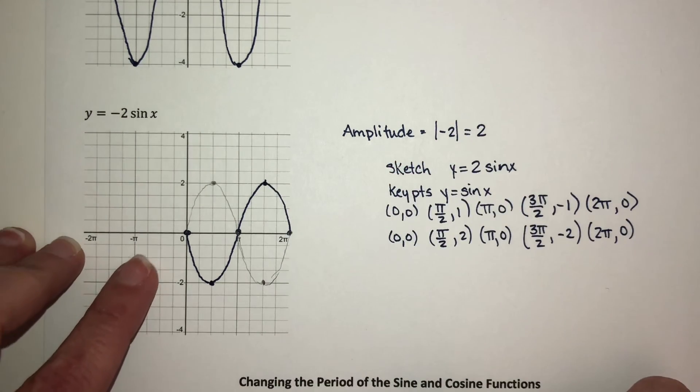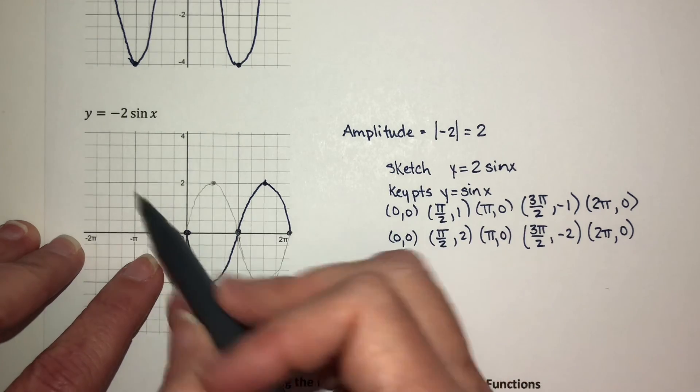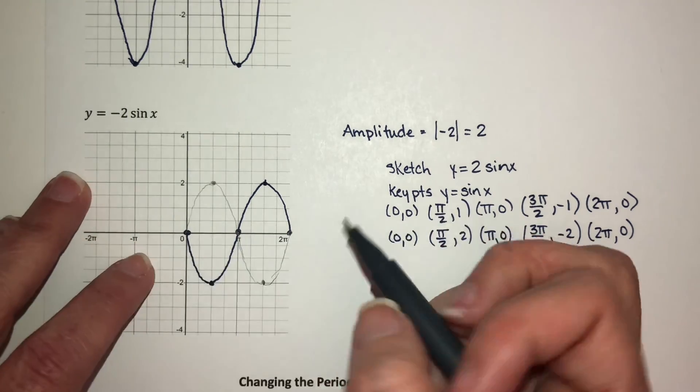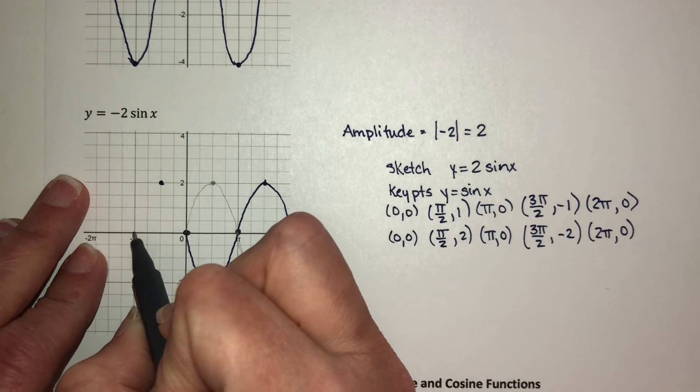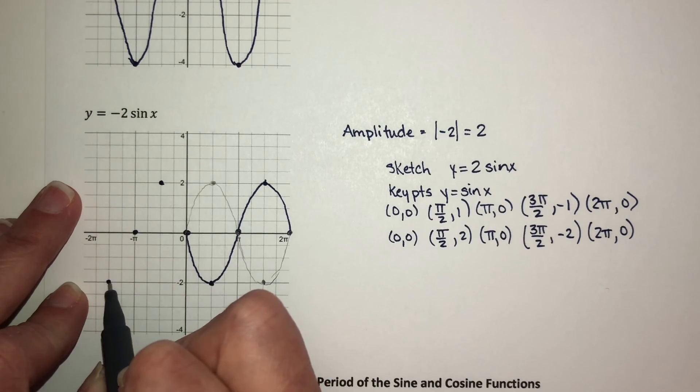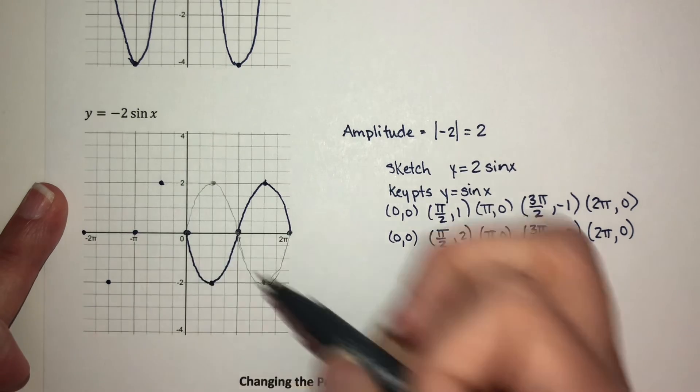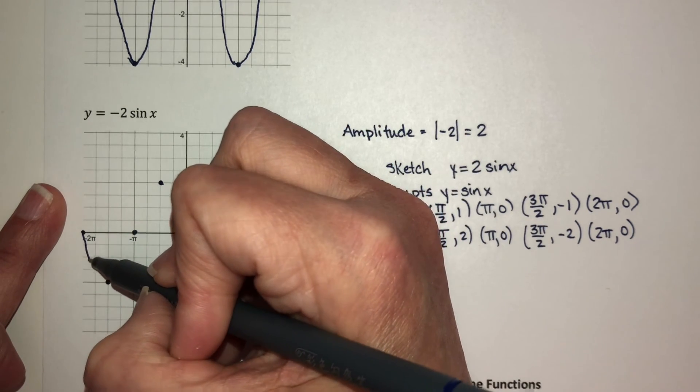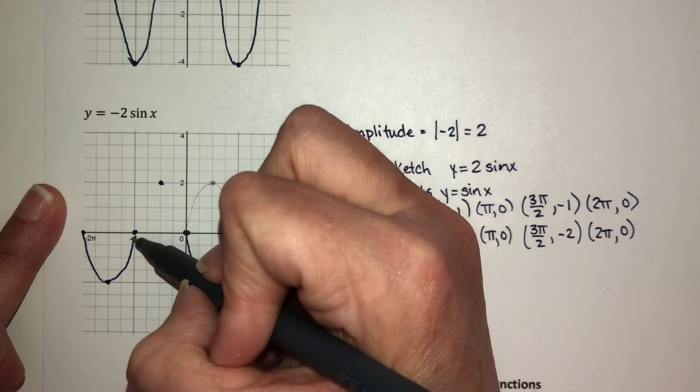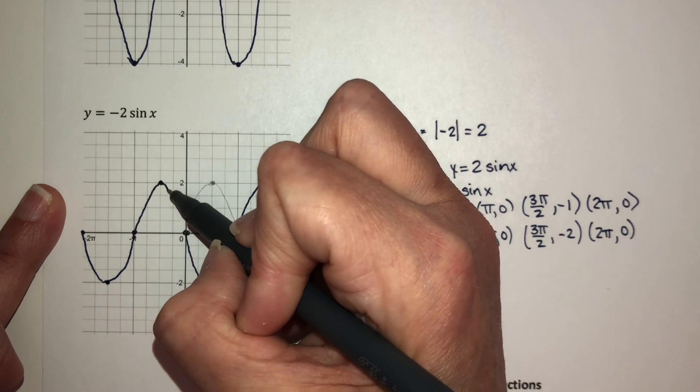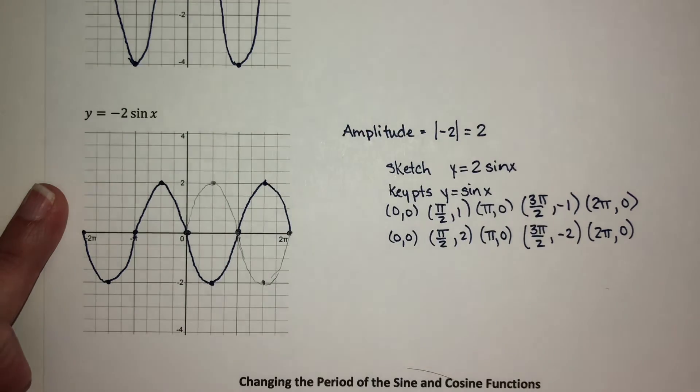We know we have an odd function, so this should be reflected across the origin. So that means I will have these points as well, and we have another cycle of that sine function drawn.